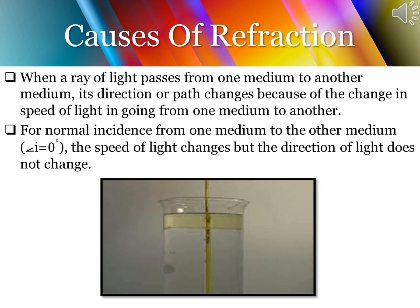When a ray of light enters from one medium to another, because of the change in the density of the two media, its direction or path changes due to the change in the speed of light going from one medium to another. Simply put, the density of the two media changes, so the speed of light changes, and because the speed changes, bending of light occurs — and this bending is termed as refraction.